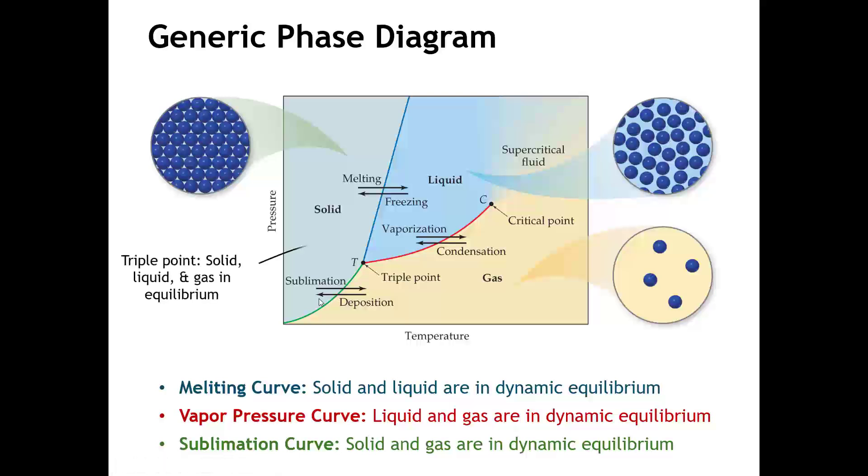We see two points on our phase diagram as well. This point labeled T is called the triple point. And this is the precise set of conditions at which the solid, liquid, and gas are in equilibrium. So there's only one combination of temperature and pressure where all three phases can be in equilibrium, and that's called the triple point. And this point C, we discussed that two lectures back, that's the critical point. So that's the temperature above which a liquid cannot exist. I guess the best way to put it is that is the point at which the vapor pressure curve ends.